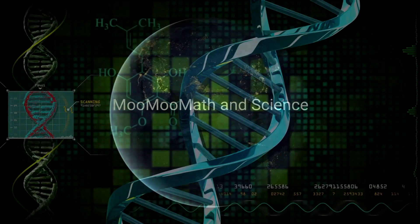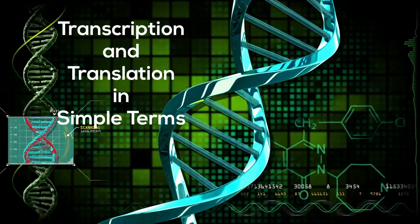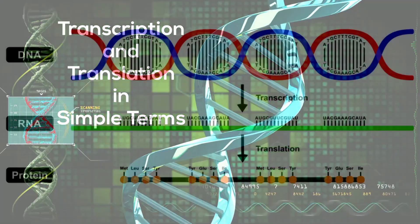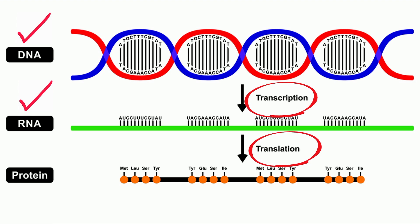Welcome to Moo Moo Math and Science and Transcription and Translation in Simple Terms. Here's a general overview. A portion of DNA is used as a template to make RNA, technically messenger RNA, and this phase is called transcription. Then the messenger RNA will travel to a ribosome where translation will occur and the amino acids will be put together in the correct order in order to create the protein.